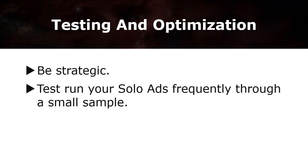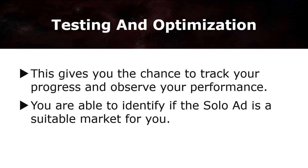Testing and optimization: always be strategic in your solo ad journey and test run your solo ads frequently through a small sample. Test small, scale small, and go bigger. For instance, when you have found a mailing list that suits your market and the sample size is 100,000 — for the first run, try taking only 10% of the solo ad block, which means you select 10,000 from the entire block. This gives you the chance to track your progress and observe your performance, and identify if the solo ad is the suitable market for you. If it didn't work out, devise a new plan and improve. Most importantly, you are not taking a risk you can't afford.